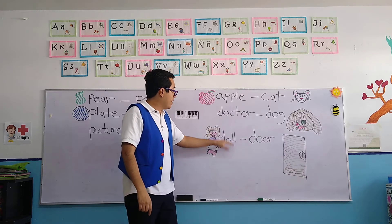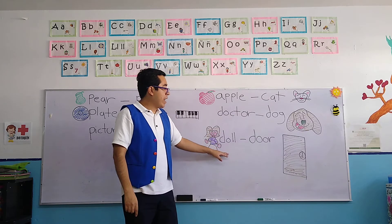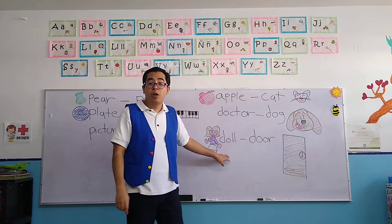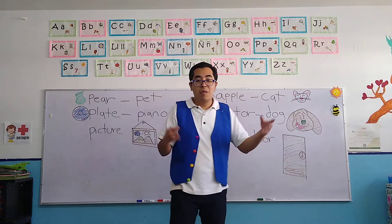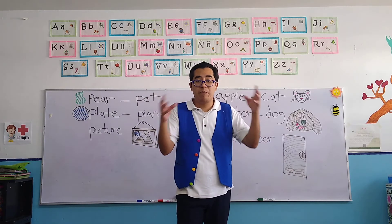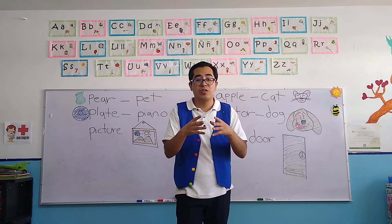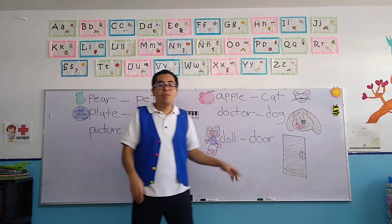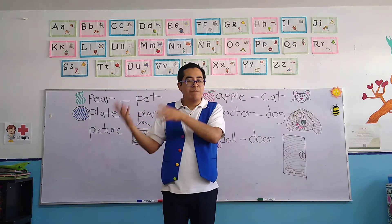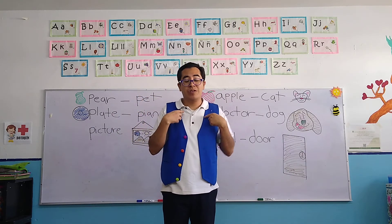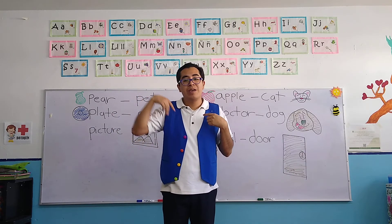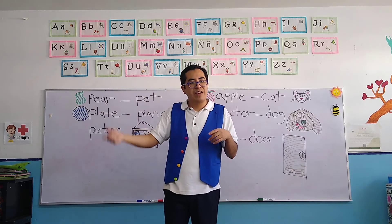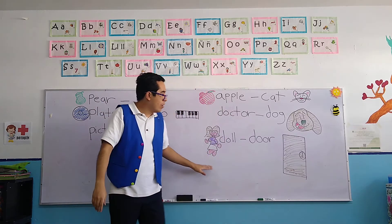The next object is a doll. Dolls are part of toys — it's a group of toys, de los juguetes. Doll is mostly for girls. Remember, the teacher is a boy — the girl, la niña — it's more for girls, the dolls.